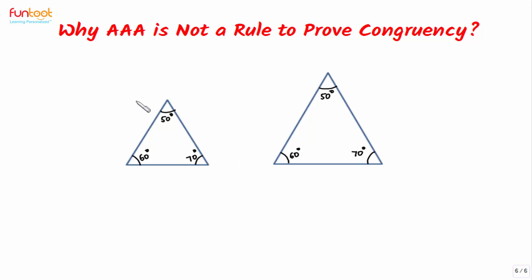This is the triangle drawn by student 1 and this is the triangle drawn by student 2. When two triangles are drawn by two students with the same angle measures, we can see that one triangle is smaller and the other is larger.